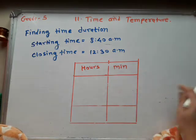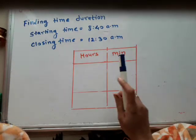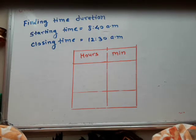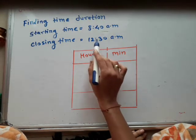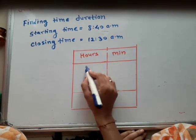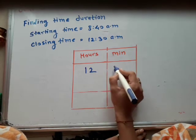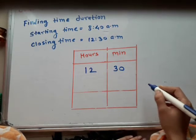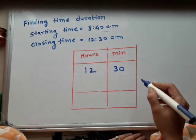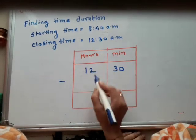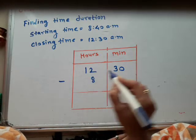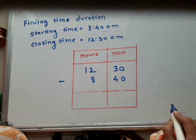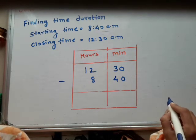We arrange the numbers first in hours and minutes. So we write the closing time first. Closing time is 12 hours and 30 minutes — this is the closing time. And we subtract the starting time: minus 8 hours 40 minutes. Now here we subtract the numbers.